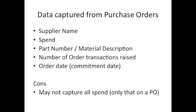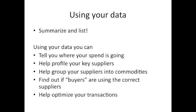Once you've obtained your data, summarized it by supplier, added your commodity groups, figured out how many transactions you have, and got your list in front of you, let's look at what you can use it for. It's really important that your list is a summary — it shouldn't be oodles and oodles of individual transactions.